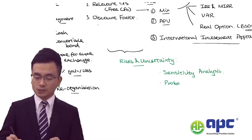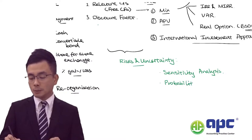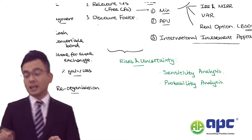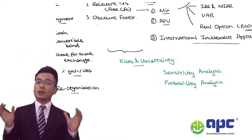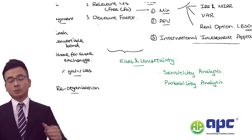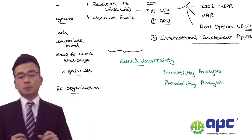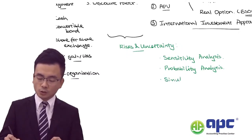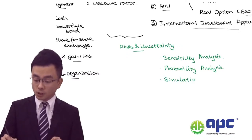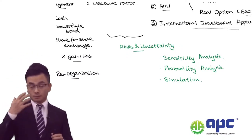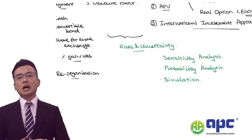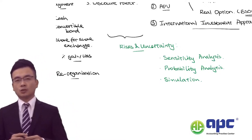Alternatively, we can consider probability analysis — instead of a single figure for estimated sales revenue, we can have different outcomes and consider the probabilities. Alternatively, nowadays we use simulation done by the computer, though that involves lots of management time and may result in potential errors.